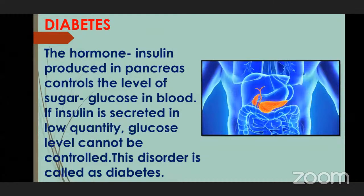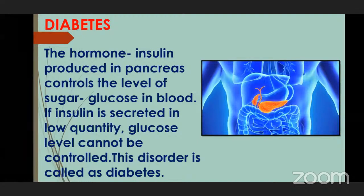Now let's see diabetes. The orange-colored organ in the picture is the pancreas. This pancreas, inside your body, produces a hormone known as insulin, which controls the sugar and glucose level in your blood. When this hormone — insulin — is secreted in low quantity, the glucose level cannot be controlled. When glucose level is not controlled, this disorder leads to diabetes. So what causes diabetes? When the insulin level is secreted in low quantity, the glucose level cannot be controlled, which leads to diabetes.